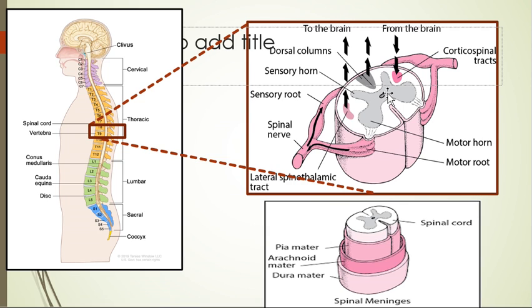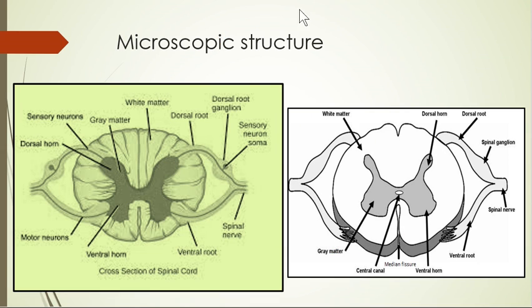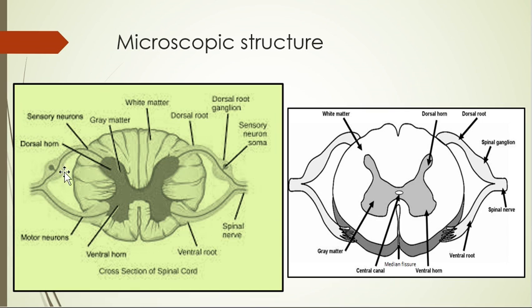There is a central canal at the center where CSF flows. In the microscopic structure of the spinal cord, you can see an H-shaped area called gray matter, surrounded by white matter. There is a dorsal root ganglion on the dorsal root. The ganglion exists because sensory afferents are carried by pseudo-unipolar neurons — which have one-way impulse transmission but the cell body is positioned centrally, resembling bipolar neurons.